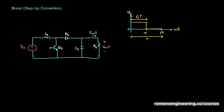Let's do the same thing we did for the buck converter: we'll see what the circuit looks like from zero to pi when transistor Q1 is on, and then what it looks like when it is off. From zero to pi, we have State 1. During that state, transistor Q1 is on, so the circuit looks like this: Vin through L1 through Q1 and back to Vin.